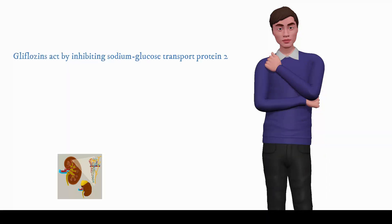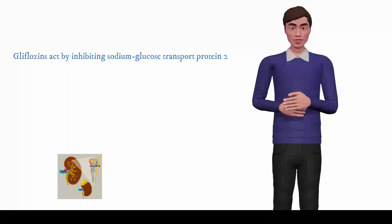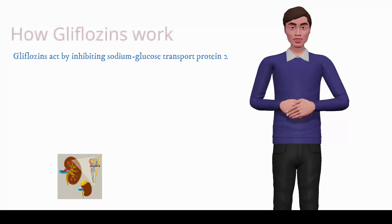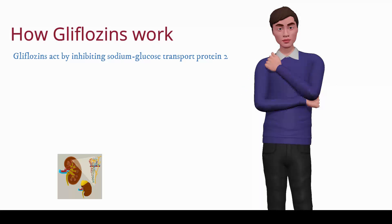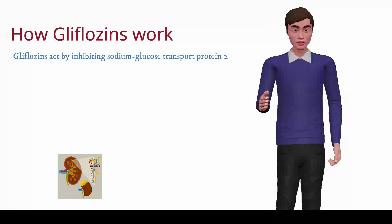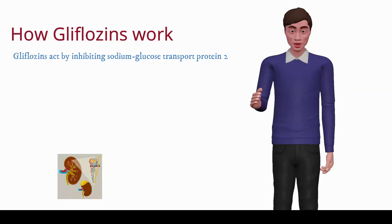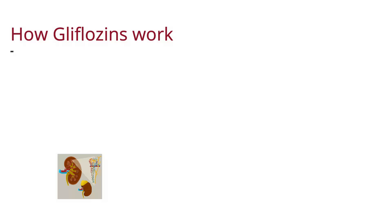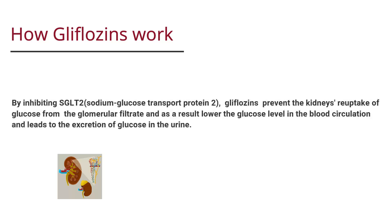Gliflozins act by inhibiting sodium-glucose transport protein 2. By inhibiting SGLT2, gliflozins prevent the kidneys' reuptake of glucose from the glomerular filtrate, and as a result lower the glucose level in blood circulation and lead to the excretion of glucose in the urine.